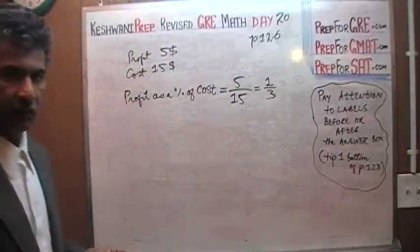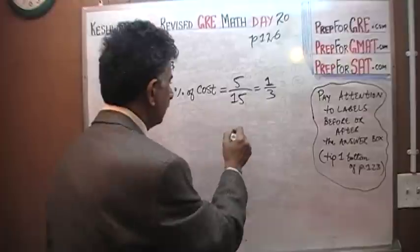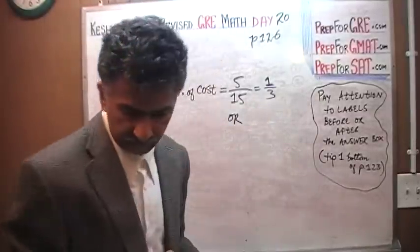Can you just put in one-third? Can you just enter one-third? Of course not, because what is the question asking?